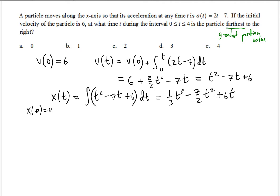Now let's evaluate this position function at all the time values and see which t value gives the greatest position value — that will be the time at which the particle is farthest to the right. We check 5 t-values: 0, 1, 2, 3, and 4. x of 0 is 0, which confirms our initial position assumption.